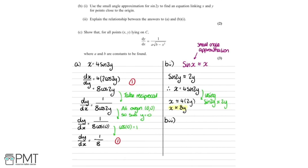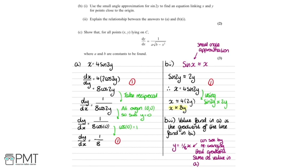For part B2, we need to explain the relationship between the answers to A and B1. The value found in part A is the gradient of the line found in part B1. What we found in part A — 1 over 8 — is the gradient of this line. That makes sense because if we rearrange x approximately equals 8y to get y equals 1 over 8 times x, we can see the gradient is 1 over 8. You get one mark for getting x approximately equal to 8y, and the second mark for this statement.